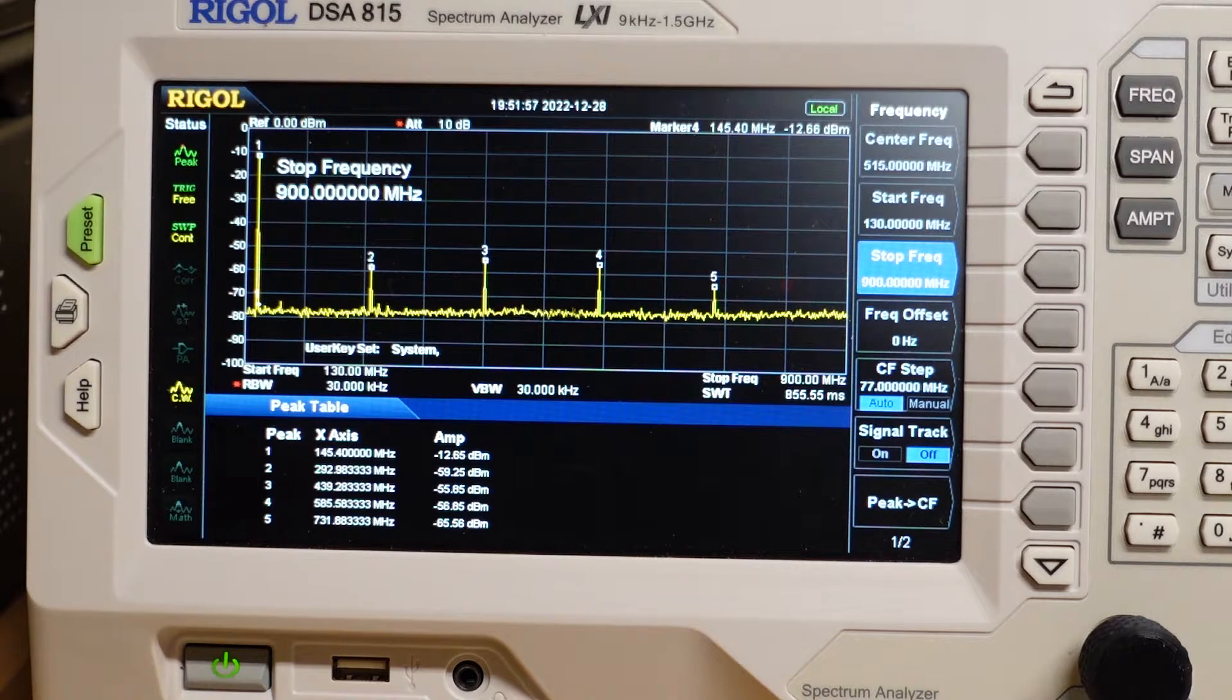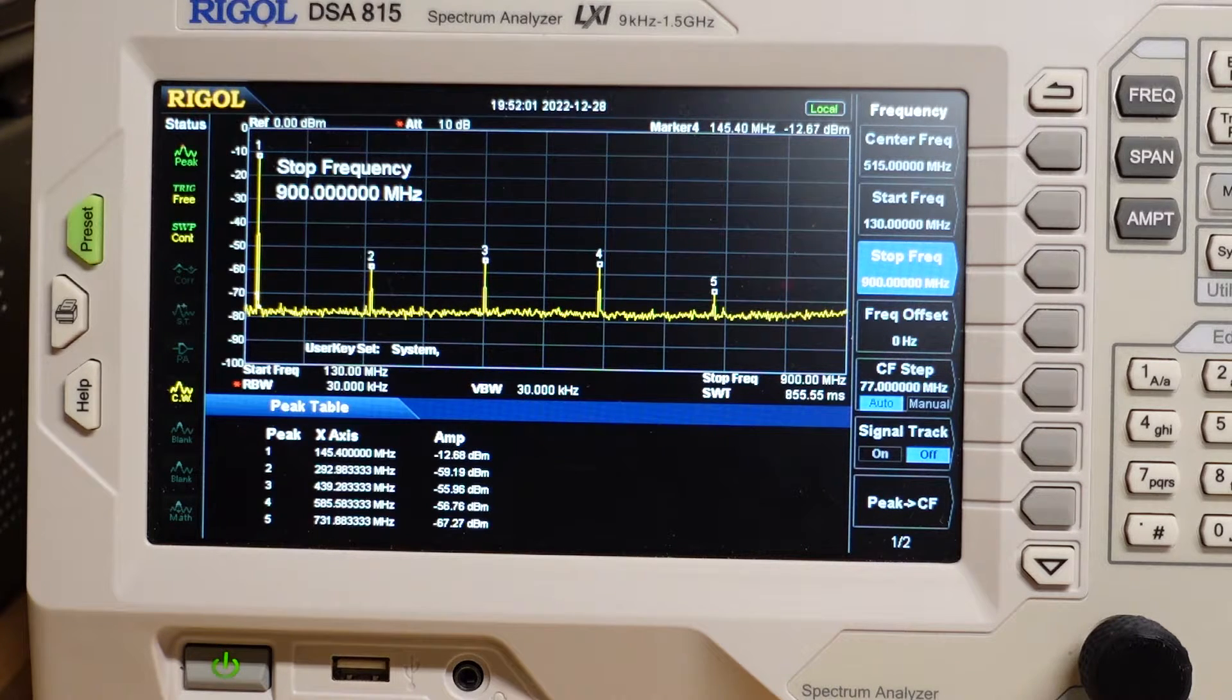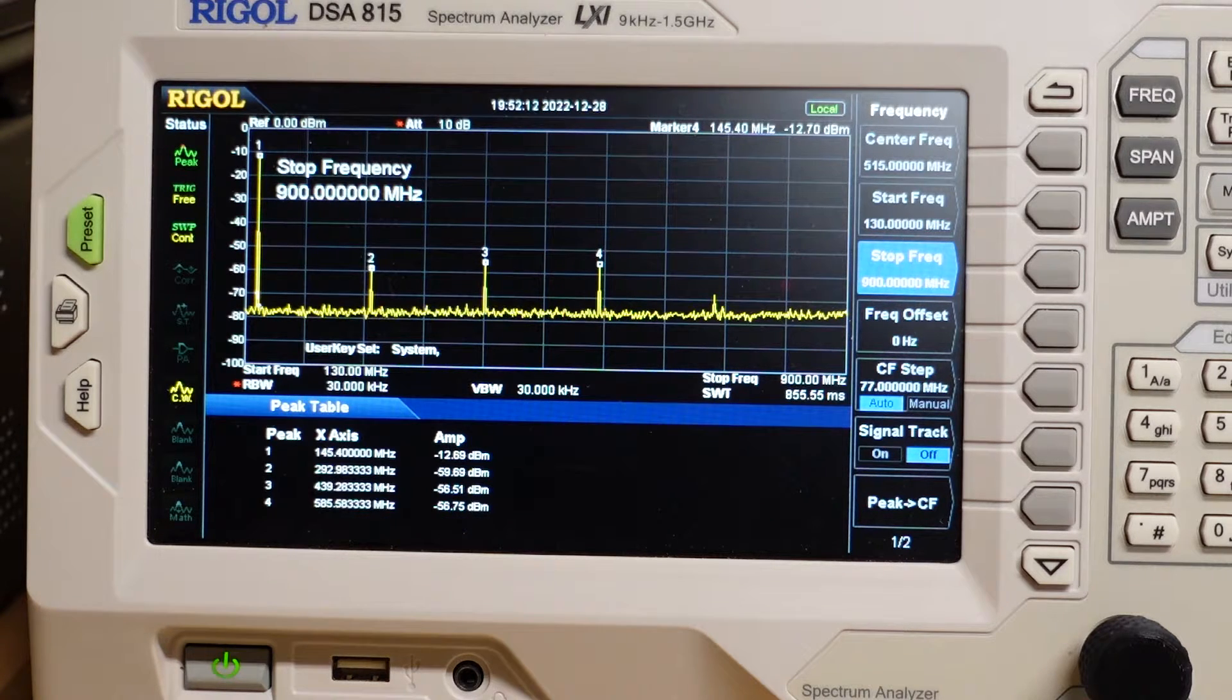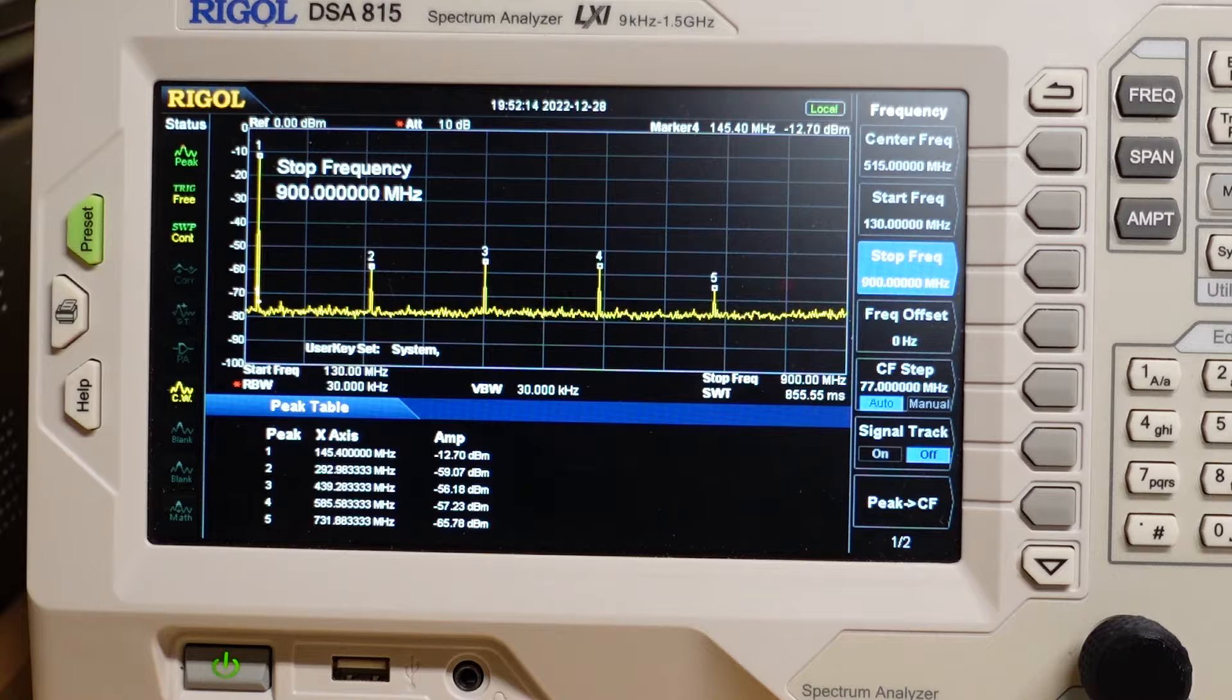And then 2, 3, 4, and 5 are considerably less. So the closest one, the third harmonic is at minus 56 dBm. Number two is at minus 58. Third is minus 56 or 55, somewhere in there. Fourth is minus 57. And the fifth harmonic is at minus 66.